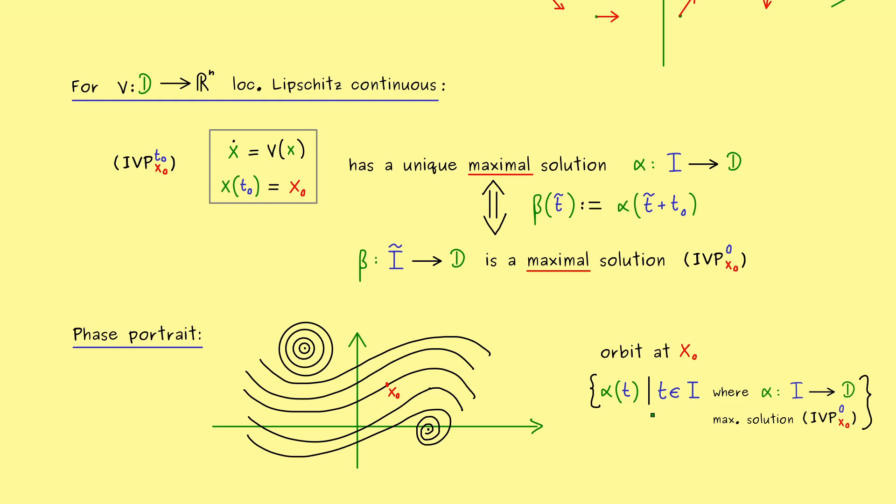Simply because, if we change it, we will change the solution function, but not the collection of the images of the solution function. In the end, it still hits the same points in Rn. Therefore, we have a very nice result of the phase portrait for our locally Lipschitz continuous function v.